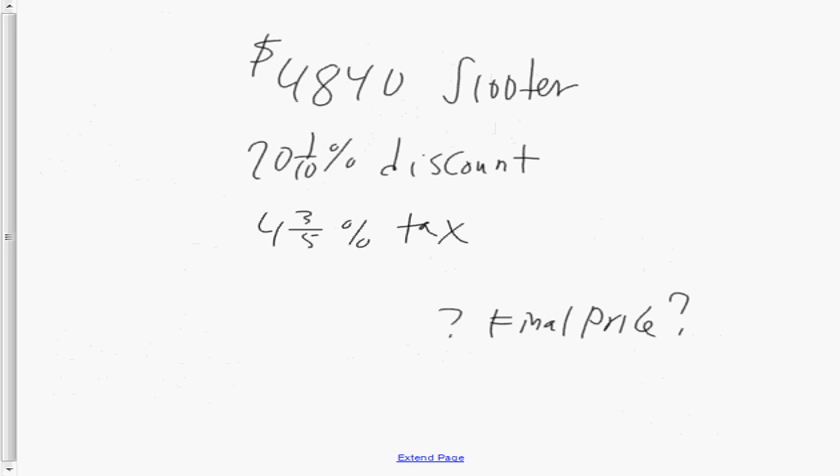And your final question is, you're given a scooter that costs $4,840, and you're given a 20 and one-tenth percent discount. Then you have to add on 4 and three-fifths percent tax. How much is your final price? So the first thing I'm going to do is calculate how much the discount is. So 20.1% is 20.1 out of 100, which is 201 over 1,000, which is 20 and a tenth percent of that amount, which is $4,840. If I calculate that discount, so 20 and a tenth percent of the $4,840 scooter, the discount